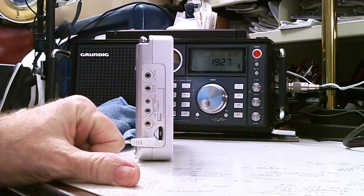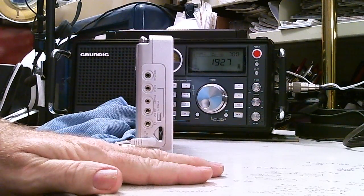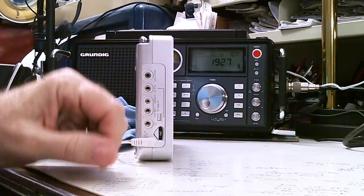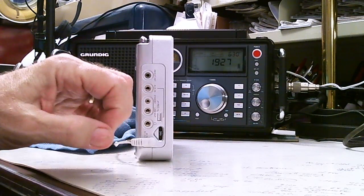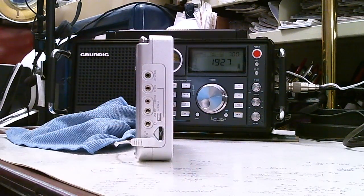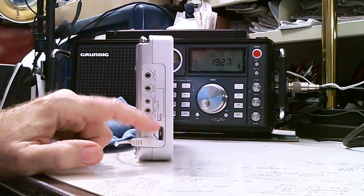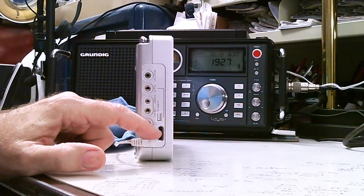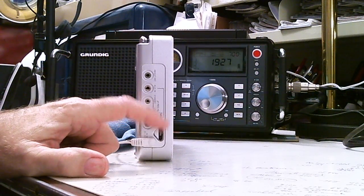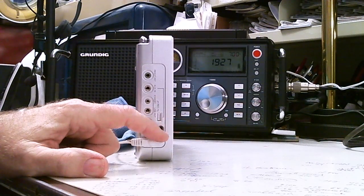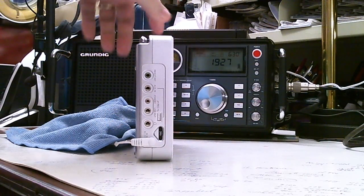It comes with an AC adapter, headphones, a carrying case, and one of those reel antennas or eel antennas, about 20 feet long. Down here it has an RF gain wheel right here, so you can adjust the RF gain manually.